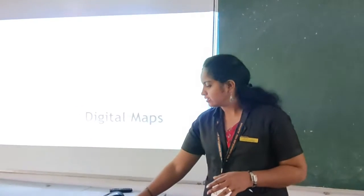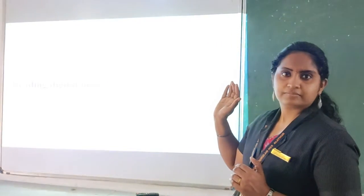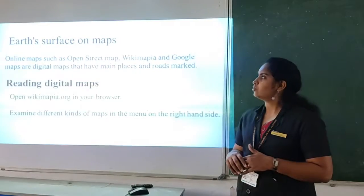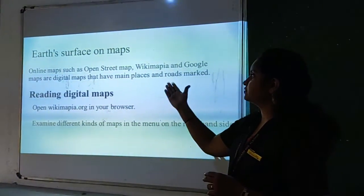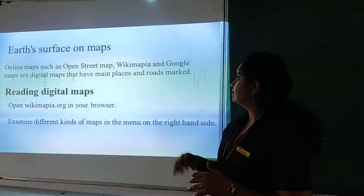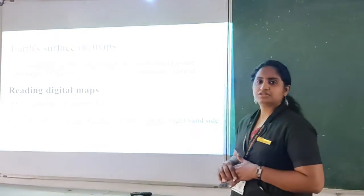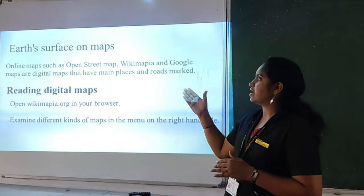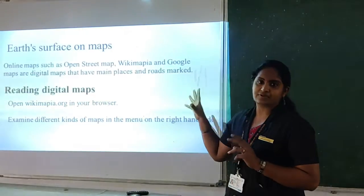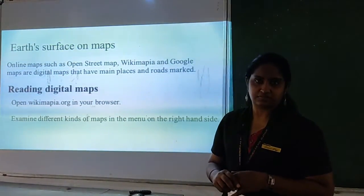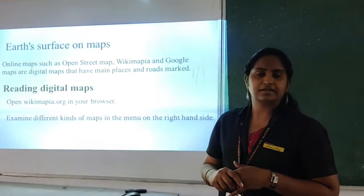We will see examples of online maps that we generally use — such as OpenStreetMap, Wikimapia, and Google Maps. These are the main digital maps we use to find places. In these maps, the contents are added by the users — generally the users of that particular area are adding the details.